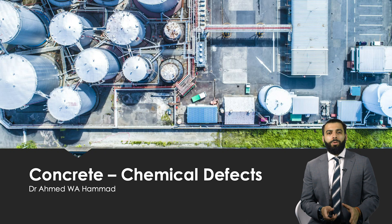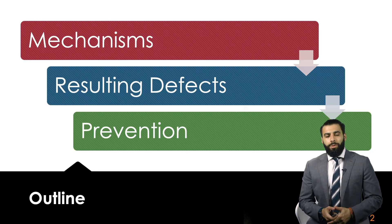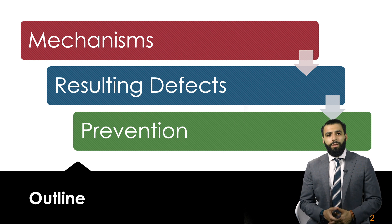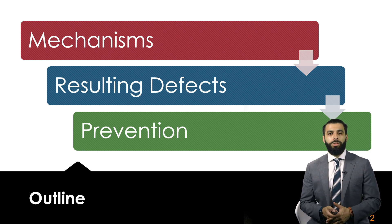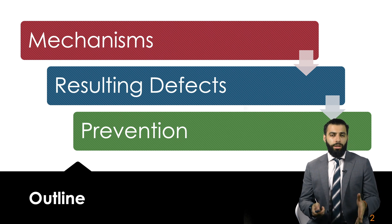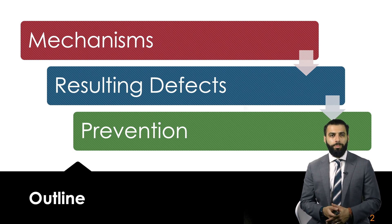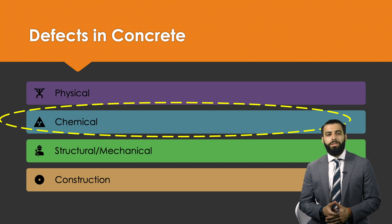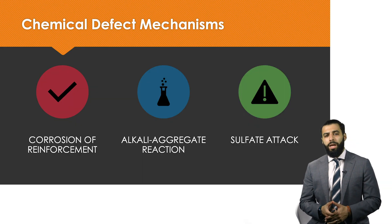In this video we're going to be looking at some of the chemical defects associated with concrete members. The outline covers: the mechanisms of chemical defects, the defect forms associated with chemical defects, and then preventions we can implement to avoid chemical defects in our concrete members. Remember the classification mechanism from previous videos — we're continuing on and focusing on chemical defects.